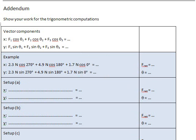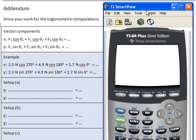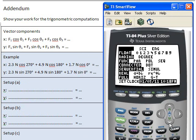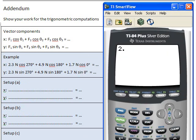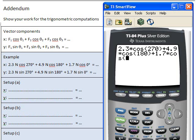Okay, and now I calculate. So here's a calculator and it says, first I'm going to see if I'm in degrees. I'm not, so I'm going to change this from radians to degrees. And then it's going to be 2.3 times cosine 270 plus 4.9 times cosine 180. And I just noticed I forgot to close the parentheses. Plus 1.7 times cosine of zero. Enter. That's the first one.